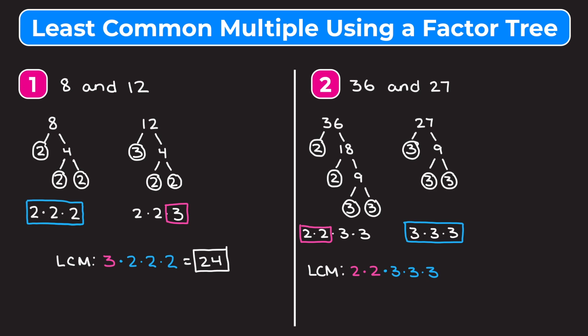Let's multiply this together in parts to make it easier. 2 × 2 × 3 = 4 × 3 = 12, and then 3 × 3 = 9, so we have 12 × 9. Twelve times 9 gives us 108, so the least common multiple between 36 and 27 is 108.